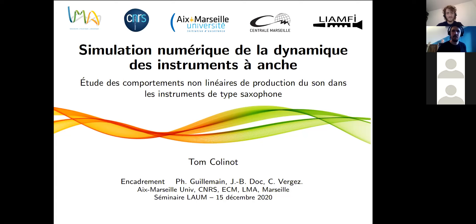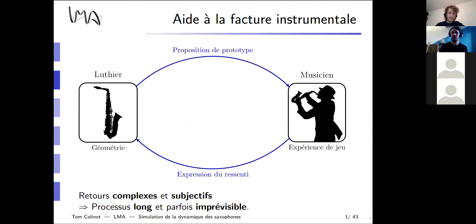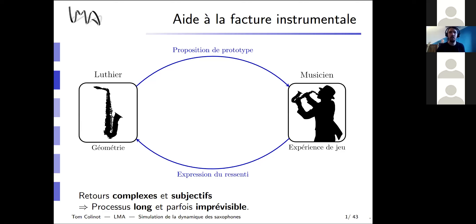I'll start by presenting the context of my PhD, which is the assistance to instrument making, and in particular the development of new instrument prototypes. The way this works usually is you have a luthier who proposes a prototype, and then a musician tries this prototype and gives feedback to the luthier based on his or her playing experience. The problem with that classical process is that the feedback of the musician can be complex and subjective, making the process potentially very long — sometimes several years — and unpredictable, with tens of prototypes sometimes before arriving at a final satisfactory version.